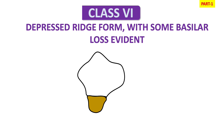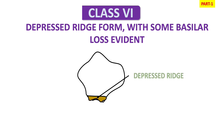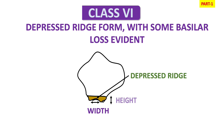In Class 6 we have a depressed ridge form with some basilar loss evident. Up to Class 5 we have a flat base, but from Class 6 there is a depressed ridge form — you can see a depression in the ridges. As you can see in the figure, there is extensive loss in both height and width resulting in depression in the ridge. In Class 6 cases, ridge anatomy will make denture construction very complex.